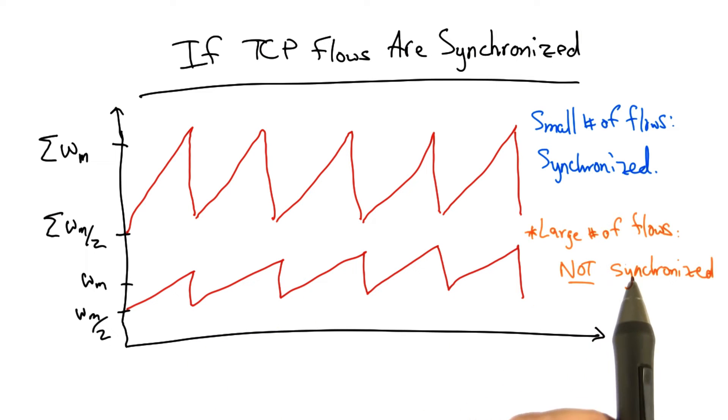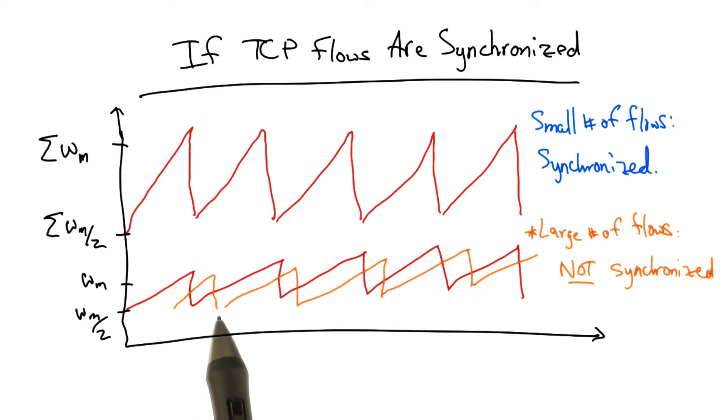But as the network supports an increasingly large number of flows, these individual TCP flows become desynchronized. So, instead of all of the flows lining up with the sawtooth, as shown in the bottom part, individual flows might see peaks at different times.